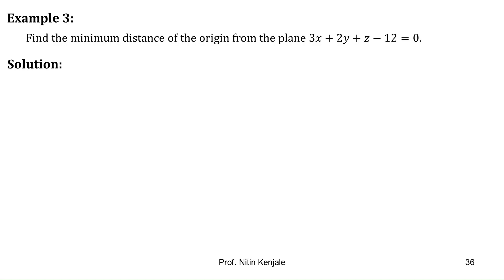In this example, we are asked to find the minimum distance of the origin from the plane 3x + 2y + z - 12 = 0. Now let us see its solution. Here the function which is to be minimized is not explicitly given. We are just told that we have to minimize the distance.